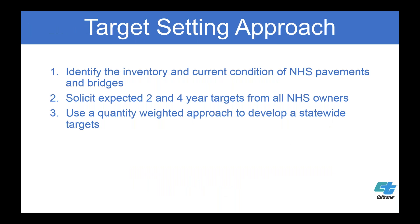We had a basic three-step target-setting approach: identify the inventory and current condition of NHS pavements and bridges regardless of owner; Caltrans funded the collection of pavement data and has historically done almost all local bridge inspections in California, so we had that information in the NBI. Then during the TAMP process, we held workshops bringing all MPOs together and asked, 'Where do you think you're going to be in 10 years?' based on their own funding and expected projects.